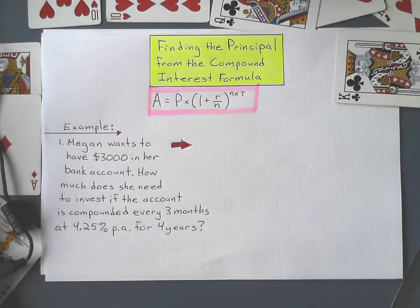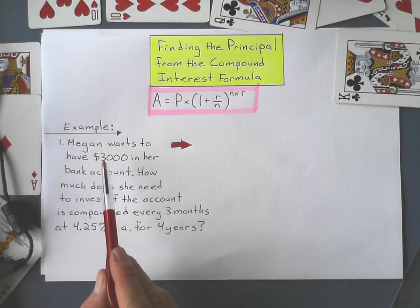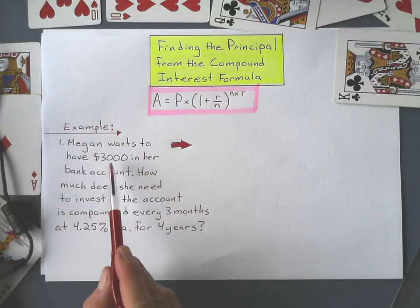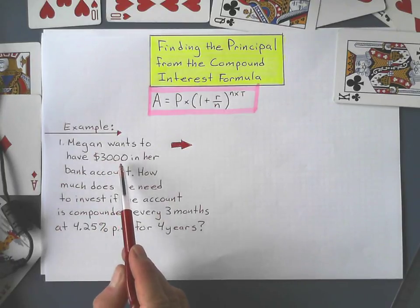Alright, so here we go. Here's the problem here. We have lots of bits of information here. At the end of the investment, she wants to have $3,000 in her bank account.